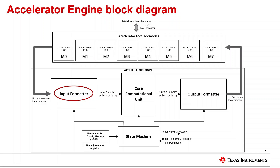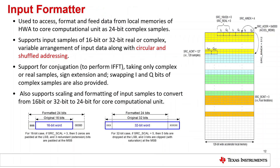Next, let's look at the input formatter block. It is used to access, format, and feed data from source local memories to the core computational engine as 24-bit complex samples. It supports input samples of 16-bit or 32-bit real or complex numbers, and variable arrangement of input data with circular and shuffled addressing. It has the ability to swap I and Q bits of samples and also supports conjugation and sign extension of input samples. It also supports scaling and formatting of 16-bit or 32-bit input samples to 24-bit wide data before feeding into the core computational engine.